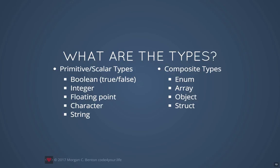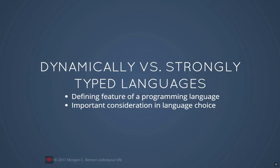When we talk about this, we talk about primitive or scalar types and composite types. Primitive types are the most basic types of data that can't be broken down any further: a boolean is a true or false value, an integer is a whole number, a floating point is a decimal number, a character is a single character, and a string is an array of characters. Composite types include enum — short for enumerated, a data type for holding categorical data — arrays, objects, and structs.